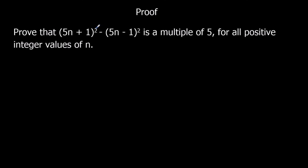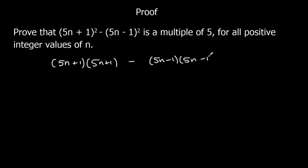Whenever we've got squared, that means times itself. So we've got 5n plus 1 times 5n plus 1, take away 5n minus 1 times 5n minus 1. We have to be quite careful about this minus sign in the middle — it means this take away all of this. So I'm going to put a second set of brackets around them, just so we know.